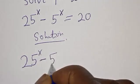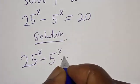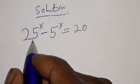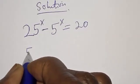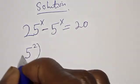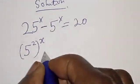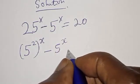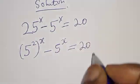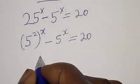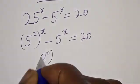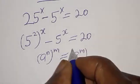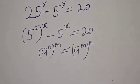We have the given equation: 25 raised to power x minus 5 raised to power x is equal to 20. Then 25 is the same as 5 squared, raised to power x, minus 5 raised to power x is equal to 20. Remember, if you have a raised to power n, raised to power m, it is the same as a raised to power n times m.